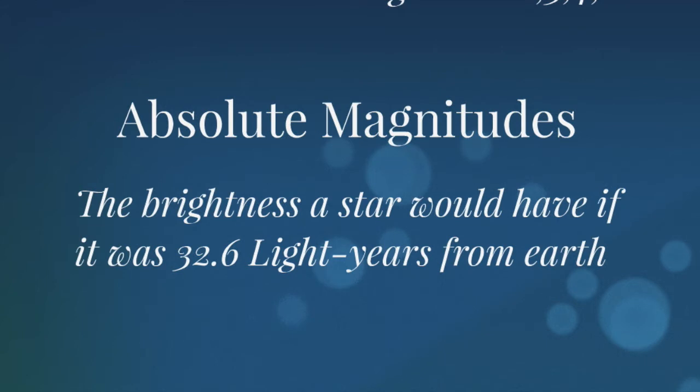So today we also use what is called an absolute magnitude. And this would be more related to the luminosity. It tells me the brightness I would see if I was 10 parsecs away from the star, or 32.6 light years from the star.